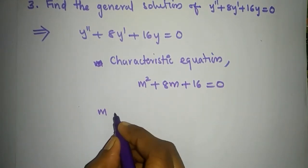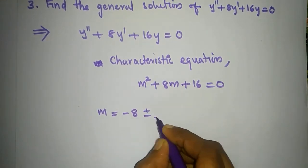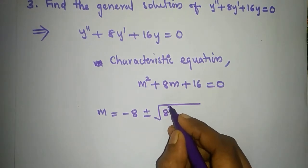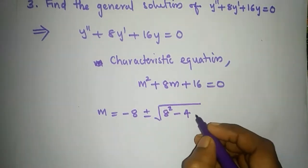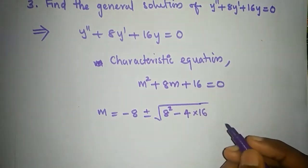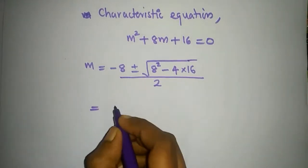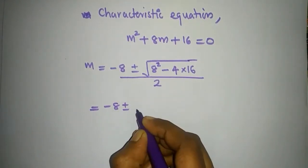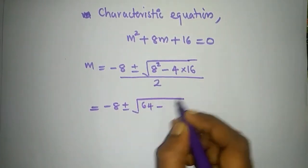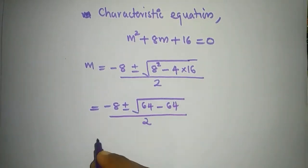So m equals minus 8 plus or minus the square root of 8 squared minus 4 times 16, divided by 2. That is minus 8 plus or minus the square root of 64 minus 64.